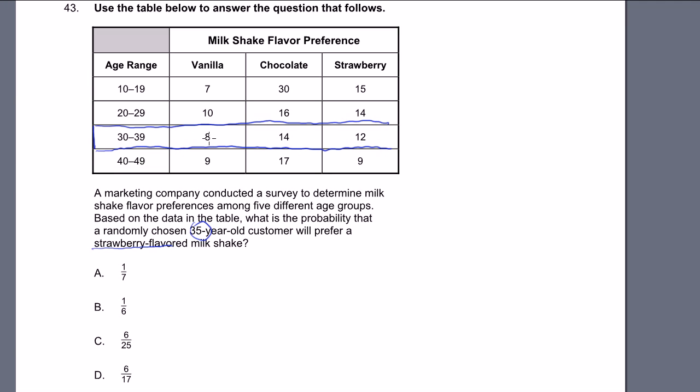So in that age group, how many total people did we survey? We surveyed 8 plus 14 is 22, plus 12 is 34. We surveyed 34 people in this age group, and how many of them liked strawberry milkshakes? 12 of them did. So 12 out of 34 thirty to 39-year-olds liked strawberry milkshakes. So the probability is 12 over 34. Or if we reduce this, that's 6 over 17. And that is D.